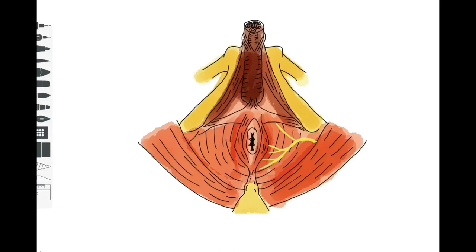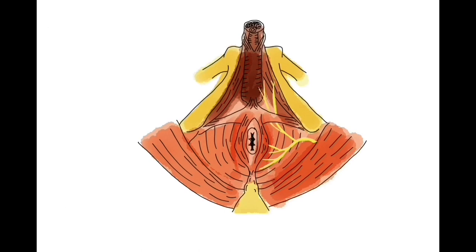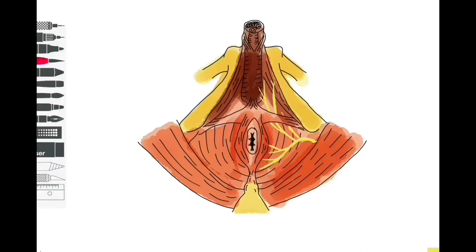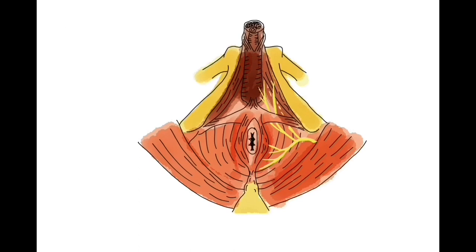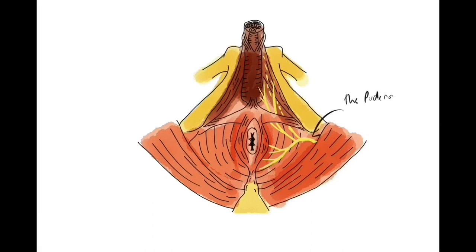The pudendal nerve leaves via the greater sciatic foramen inferior to the piriformis muscle. It passes around a ligament called the sacrospinous ligament and momentarily enters the gluteal region. It reaches the perineum via the lesser sciatic foramen and enters a space in the anal triangle called the ischioanal fossa. Within the ischioanal fossa it resides in a space called the pudendal canal, which is right inside the wall of the obturator internus muscle.